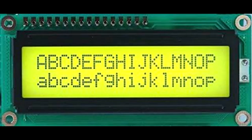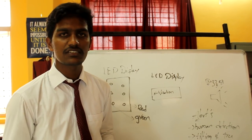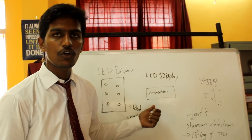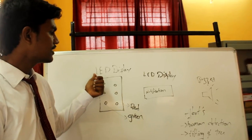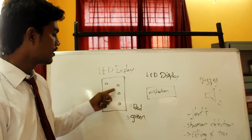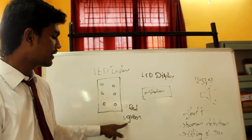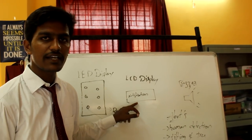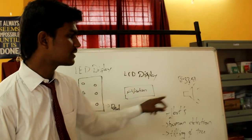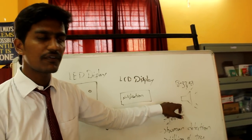These are the output components of the project. LED display: we have 6 LEDs — 3 in red color and 3 in green color. Red indicates danger and green indicates normal. LCD display: we get text-form messages. Buzzer: we get sound-form alerts.